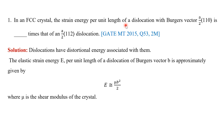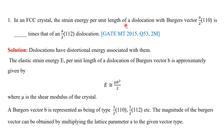In the equation E ≈ μb²/2, μ is the shear modulus of the crystal and b is the Burgers vector. Burgers vectors are usually given as 1/2 a⟨110⟩ or 1/2 a⟨111⟩ etc. To find the magnitude of a Burgers vector, we multiply the lattice parameter of the given crystal by the magnitude of the given vector type.